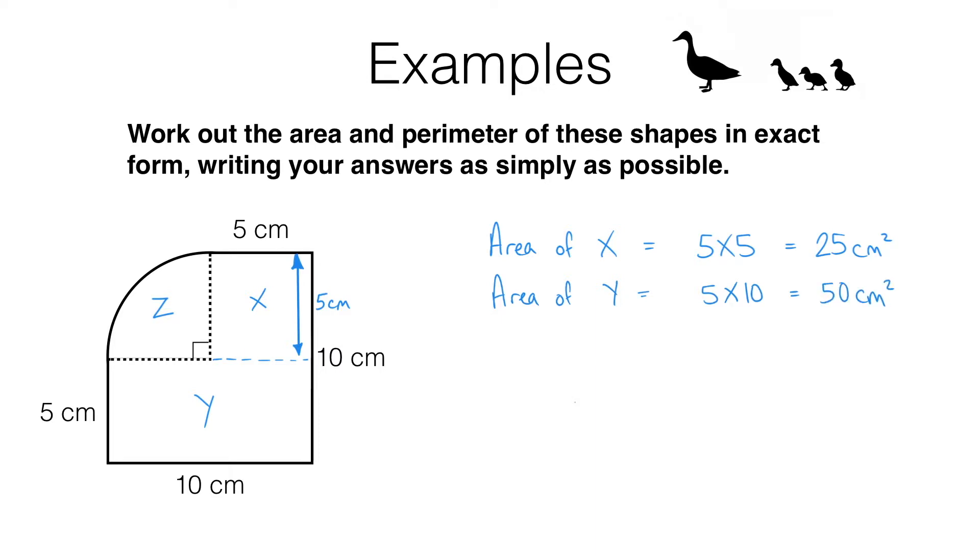Finally I need to work out the area of this quarter of a circle. Now the radius of this quarter of a circle is 5 centimeters. That distance there is the same as what we've worked out here, which is 5 centimeters. Now the area of a circle is pi r squared. I only want a quarter of that because I've only got a quarter of a circle. So the area of Z